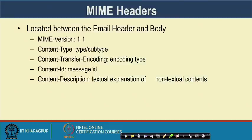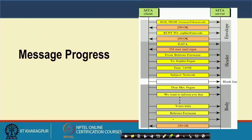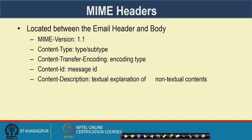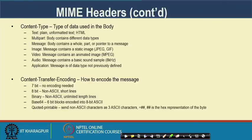Typical MIME headers are located between the email header and the body. They include: MIME-Version, Content-Type, Content-Transfer-Encoding, Content-ID, and Content-Description. Content types include text, plain text, multipart, message, image, video, audio, and application. Content transfer encoding options include 7-bit, 8-bit, binary, base64, and quoted-printable. MIME has a rich set of headers to handle different kinds of data.